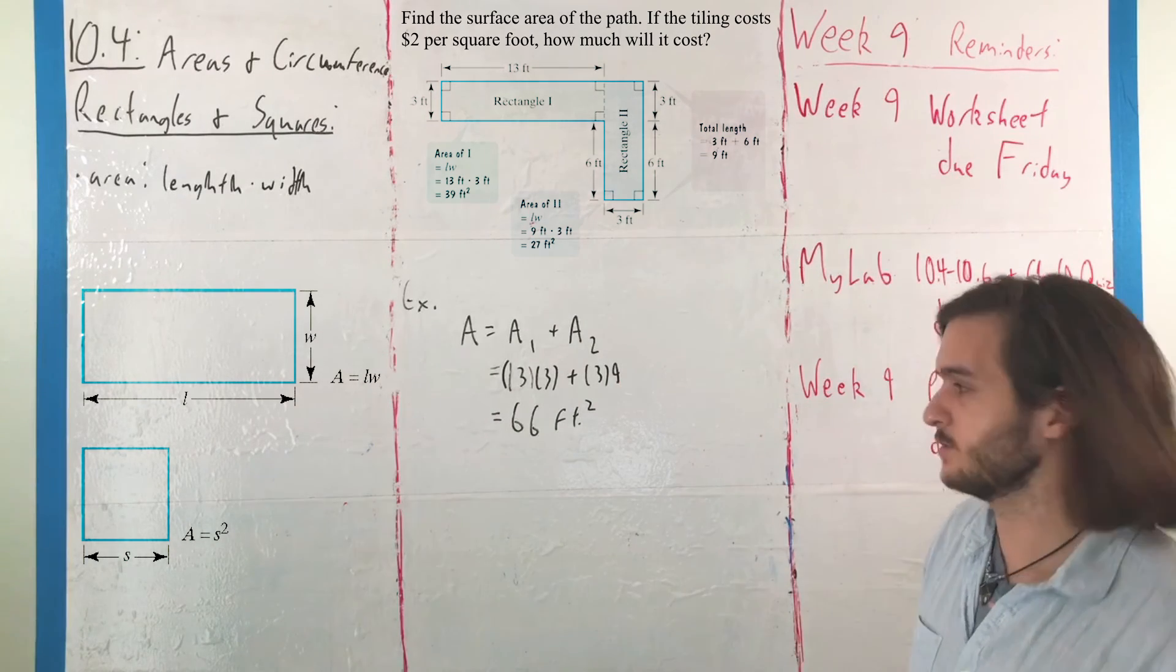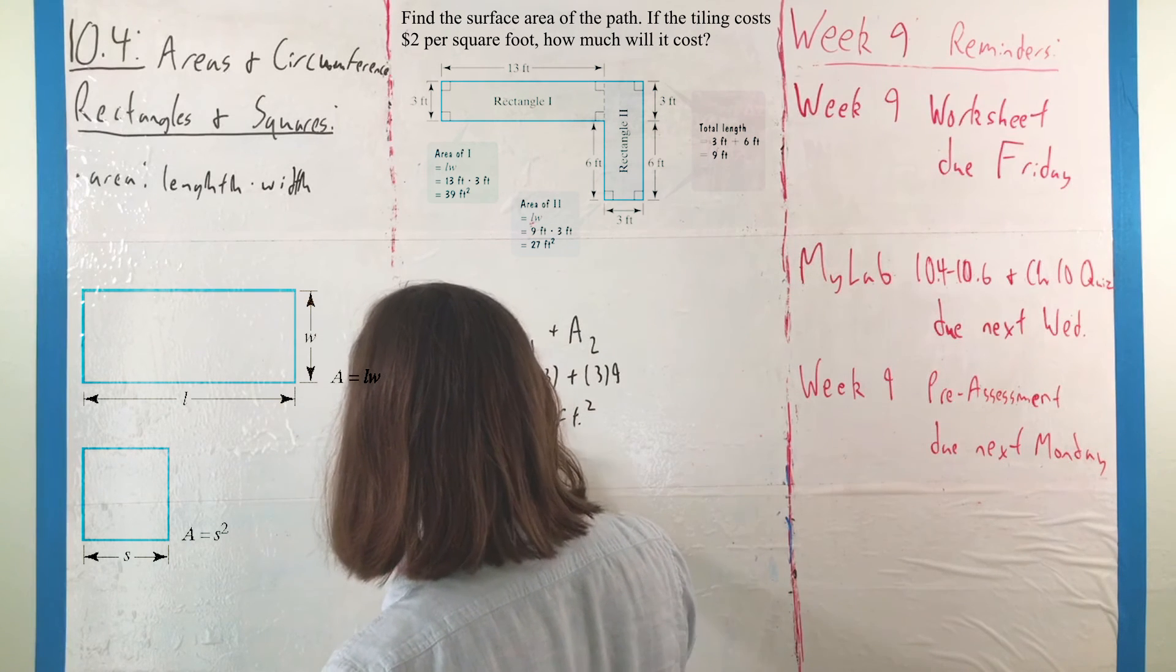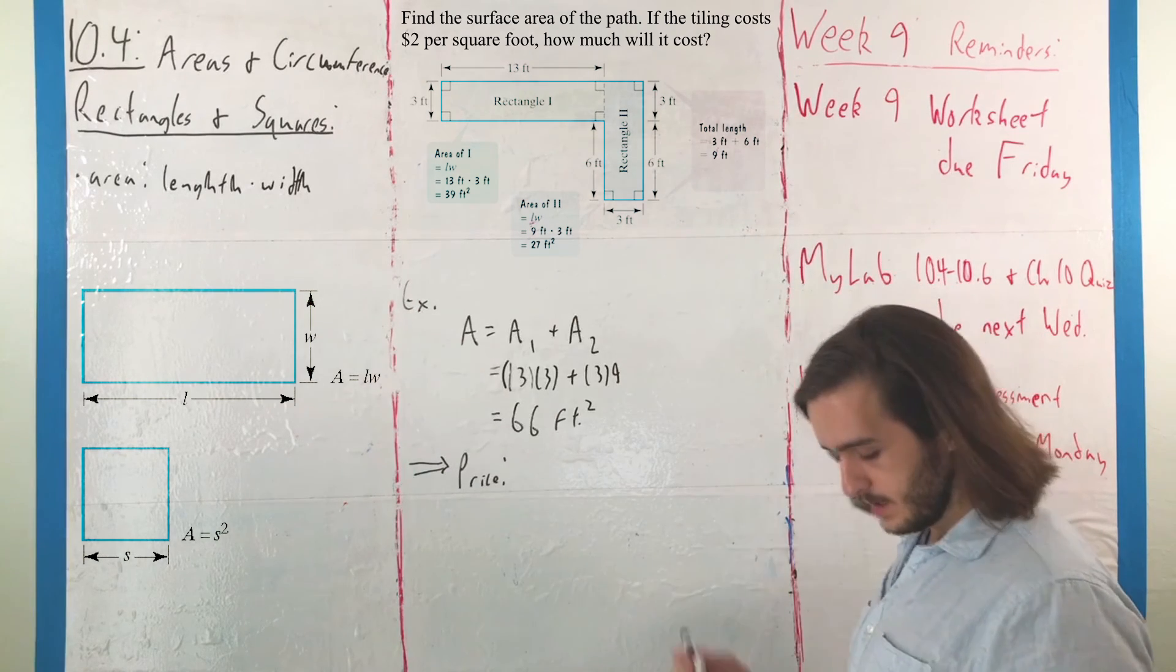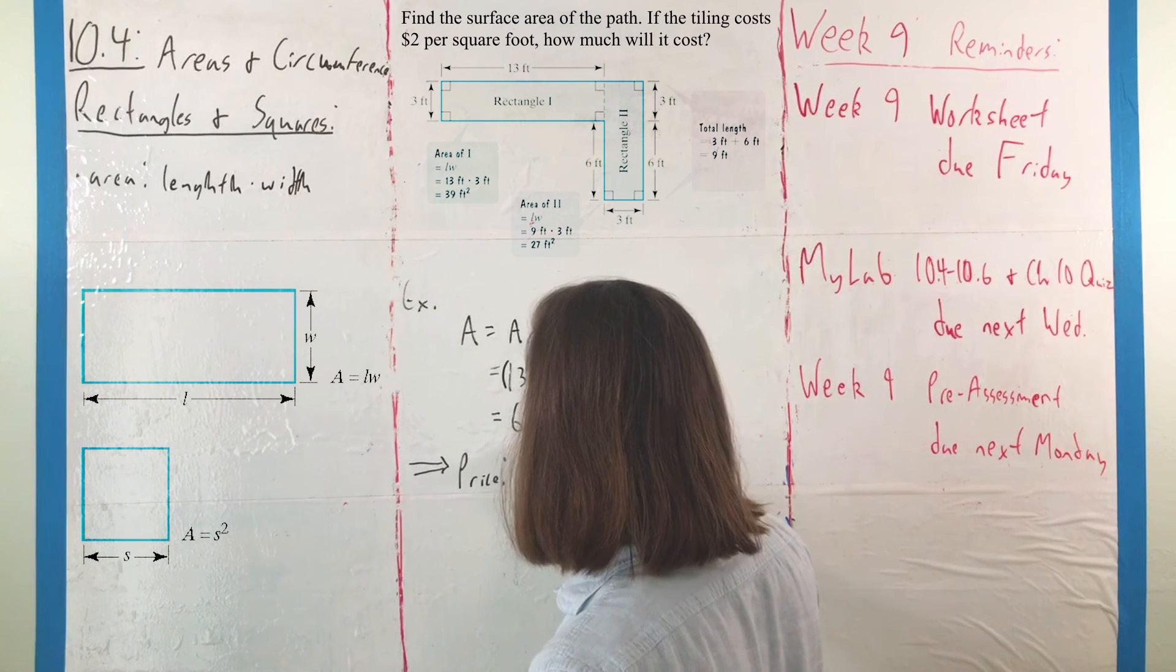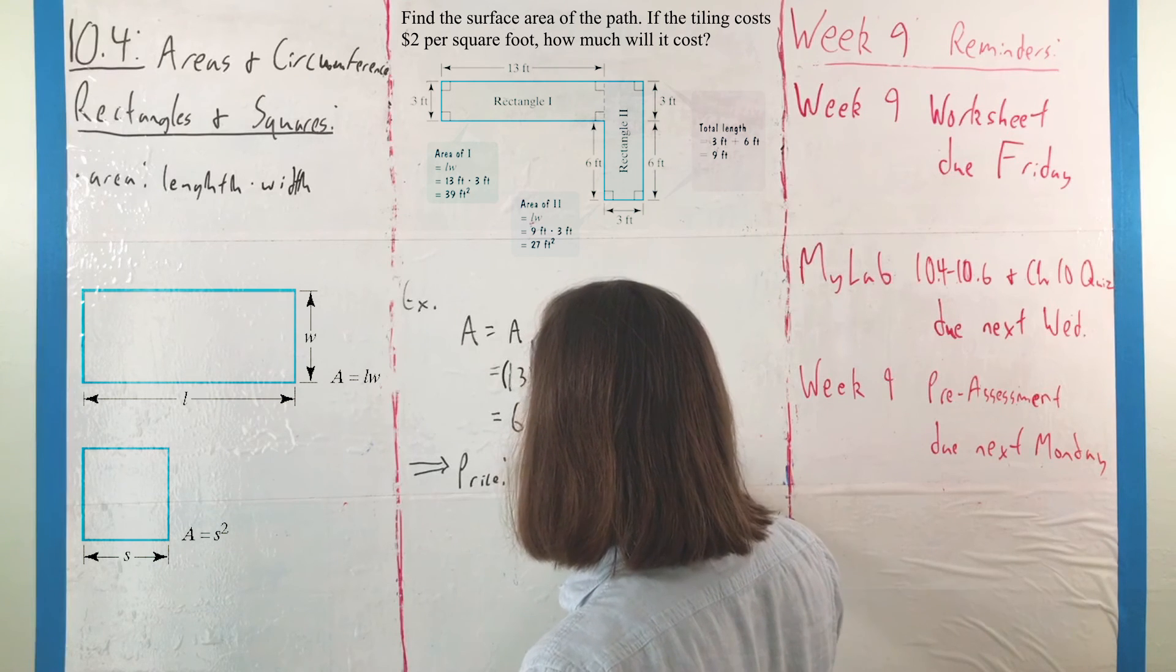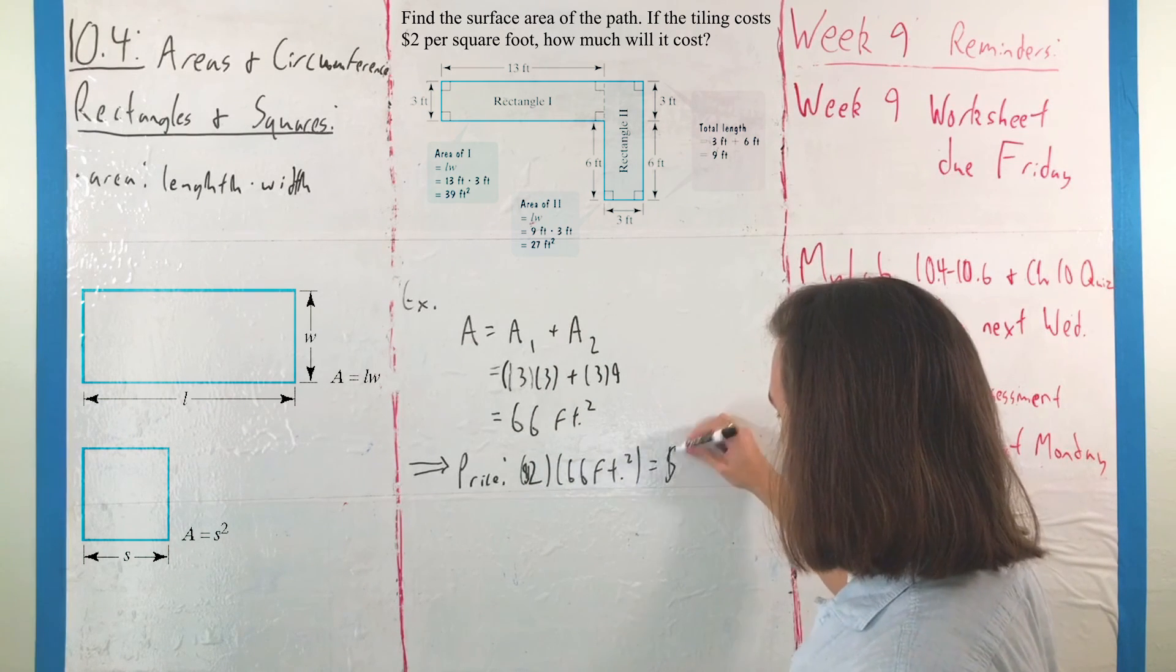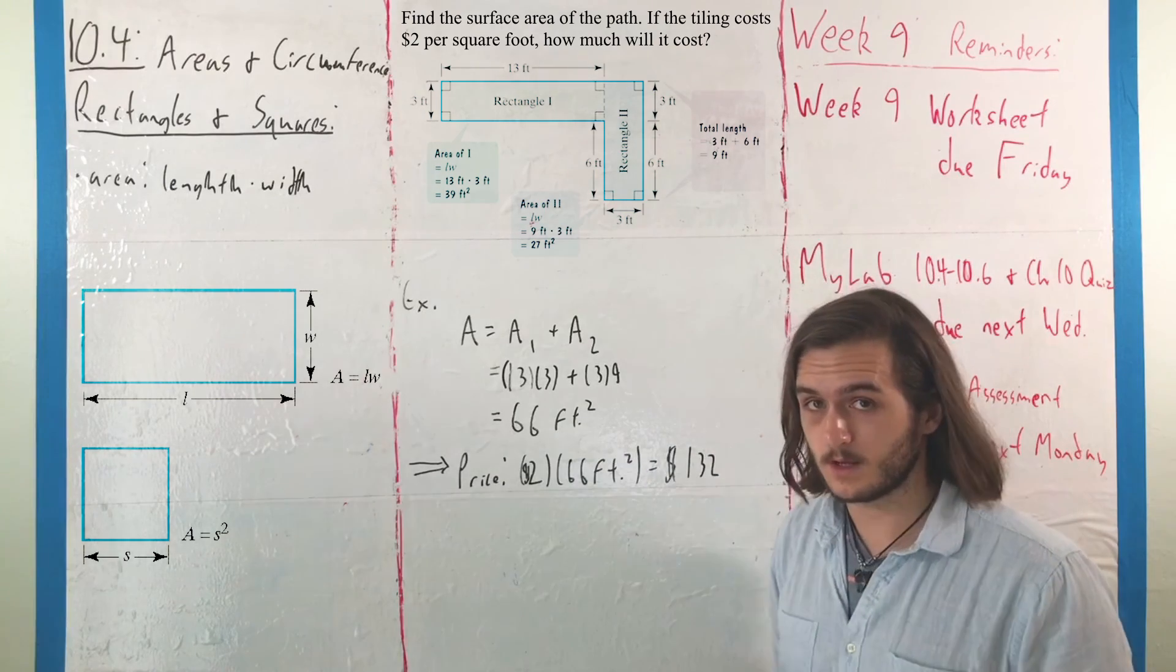So once we have the square footage, our next step is to find the price, where our price is just going to be the product of the cost per square foot times the number of square feet. So, $2 per square foot times 66 square feet leaves us with a total price of $132.